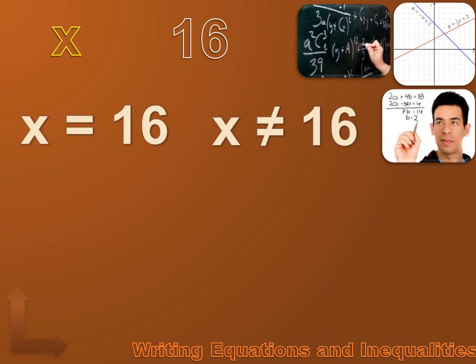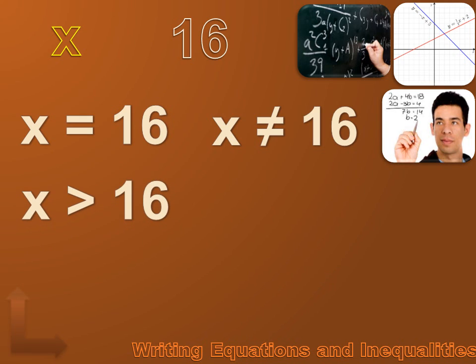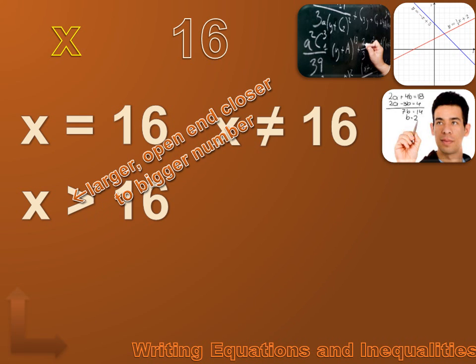What if x were always bigger than 16? It could be 17, 18, 19, 20, but it's always bigger than 16. We'd write it as x is greater than 16. If you have trouble remembering what this symbol means, remember: the larger open end of the symbol is closer to the bigger number. The larger end is closest to the bigger number — x is bigger than 16.